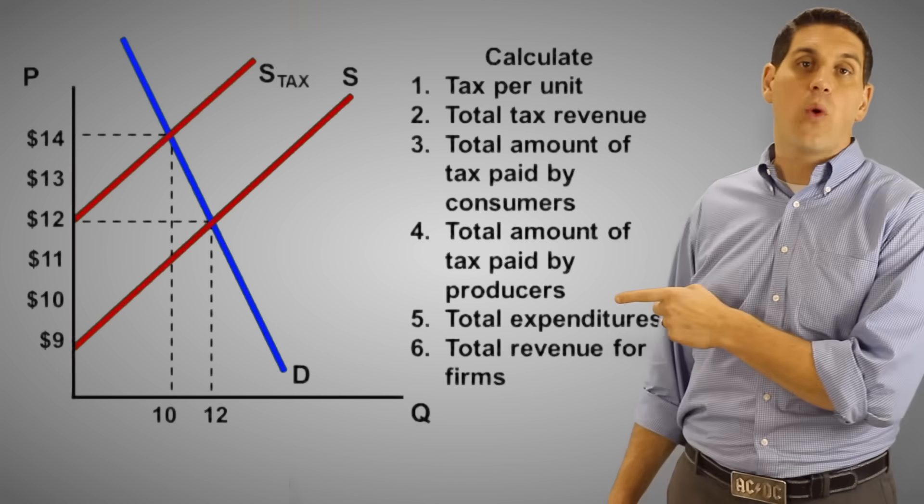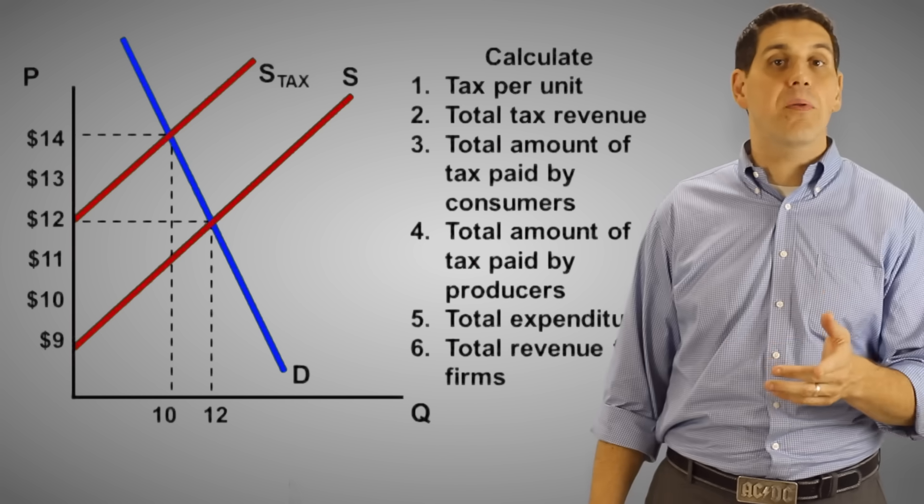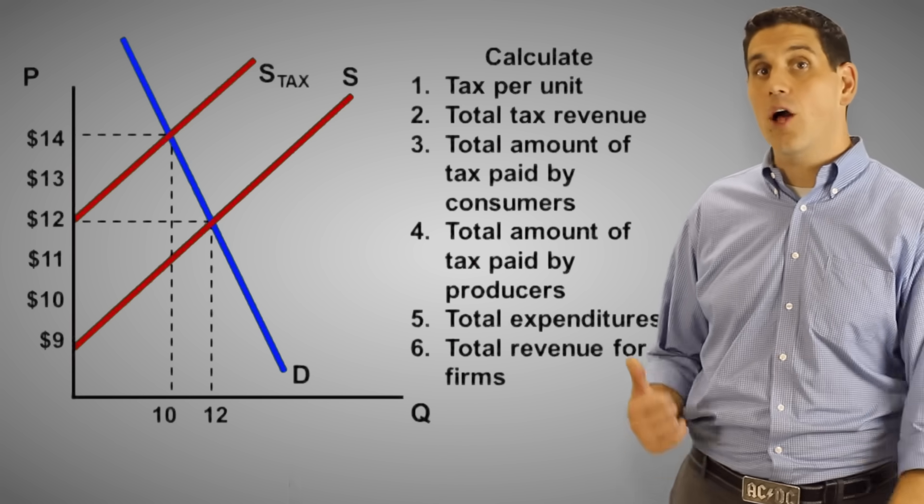As you can see, the original price was 12 and the original quantity is 12. Then the government came in and put a tax causing the supply curve to shift to the left. Now I want you to answer these questions. Pause the video and I'll go over them.